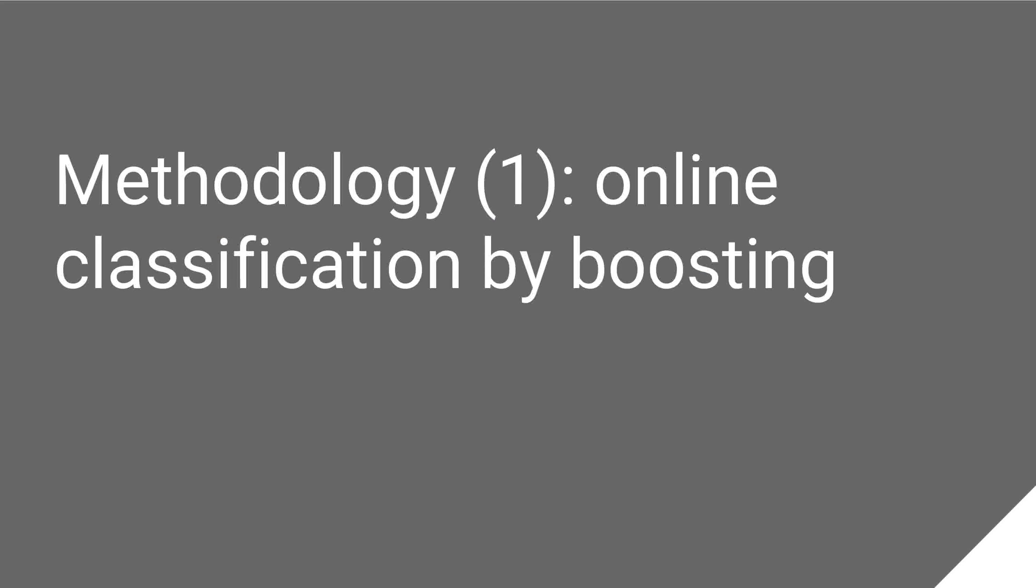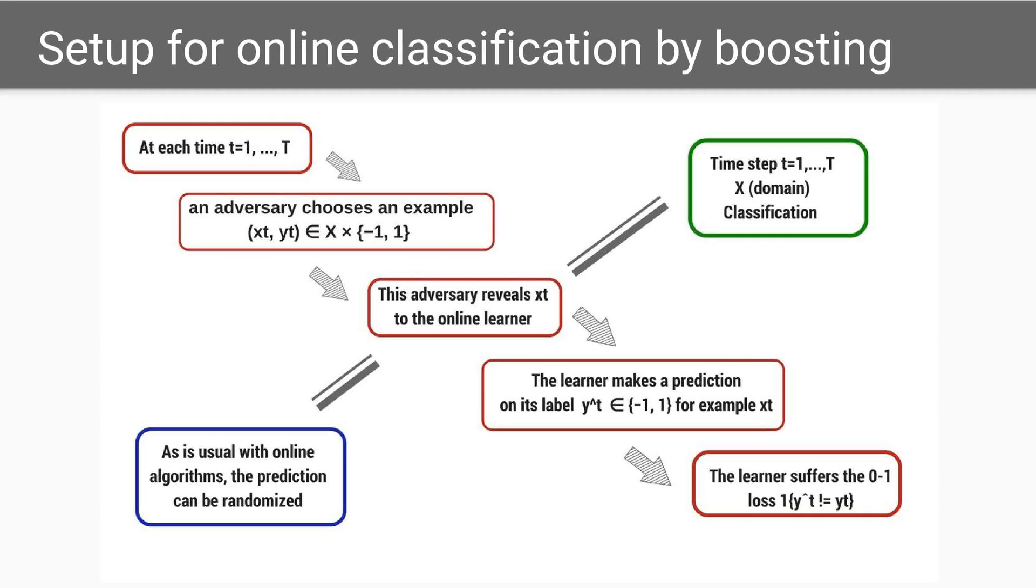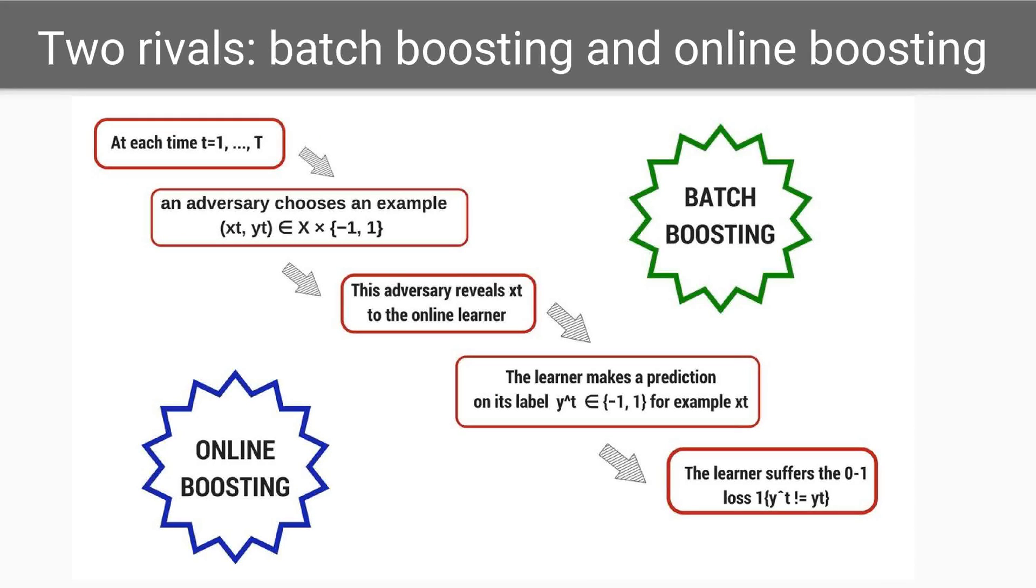Let's start with the most basic methodology. Here we can see an outline of online classification by boosting. Based on the example, the learner makes a prediction on the label and it suffers a certain loss due to an error in the classification of the example with the corresponding label sample.